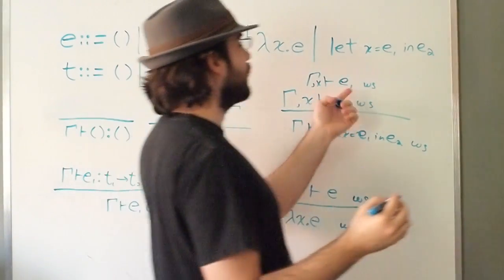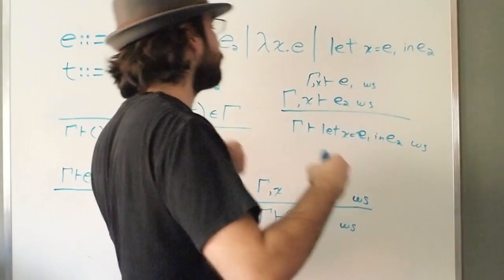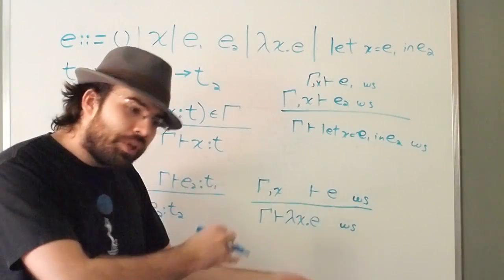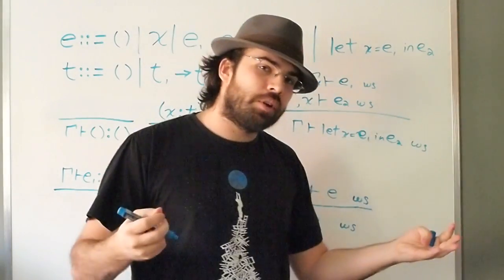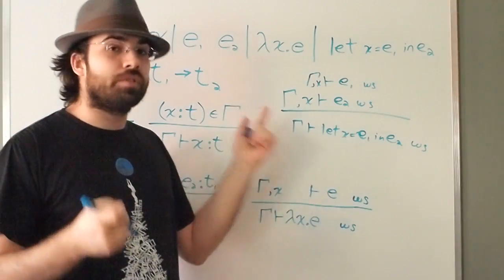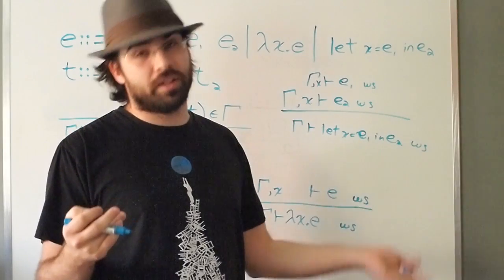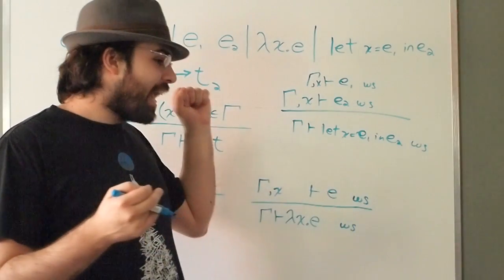So those are the scoping rules, and with the bound library we can define those scoping rules so that you can only construct terms which are well scoped.